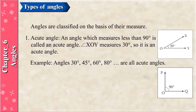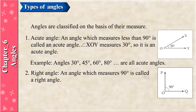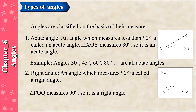Examples of acute angles: 30 degrees, 45 degrees, 60 degrees, 80 degrees, and so on are all acute angles. Right Angle: An angle which measures exactly 90 degrees is called a right angle. Angle POQ measures 90 degrees, so it is a right angle.